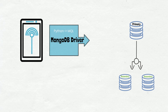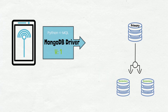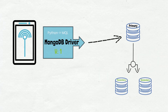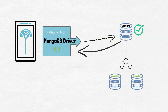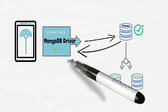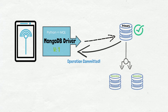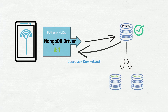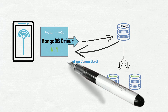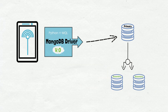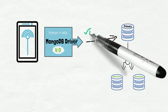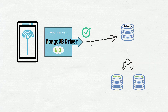If we define a write concern of one, we're telling MongoDB that we only need confirmation of the operation completing on the primary to consider the operation to be committed before the application can proceed with processing subsequent operations. Conversely, a write concern of zero means that we do not need to wait for any confirmations of an operation being committed by any member of our replica set before processing subsequent operations.